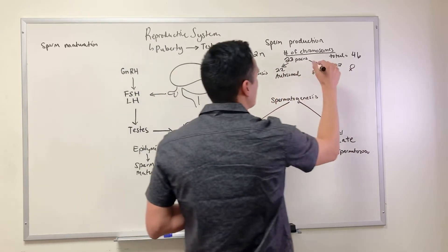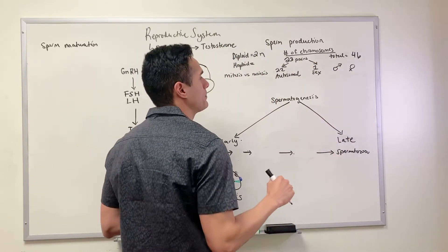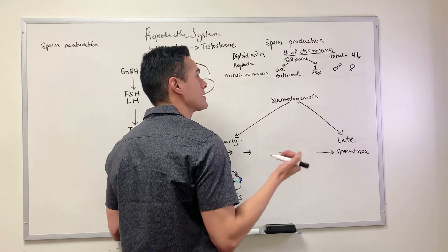22 of these pairs of chromosomes are autosomal, and then one pair is going to be the sex chromosomes.